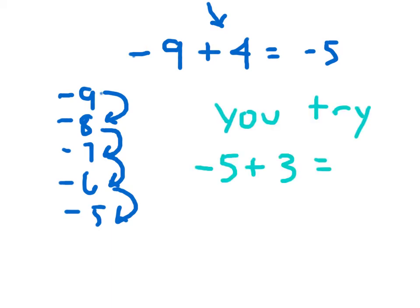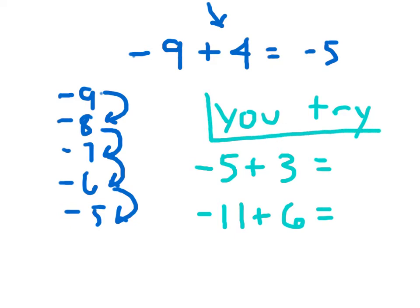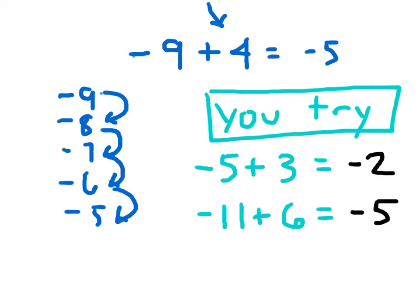Here's a U-try. Go ahead and figure out negative 5 plus 3, and then also figure out negative 11 plus 6. Copy those down and hit pause. Did you write down negative 2 as your solution there, and negative 5 as your solution there?